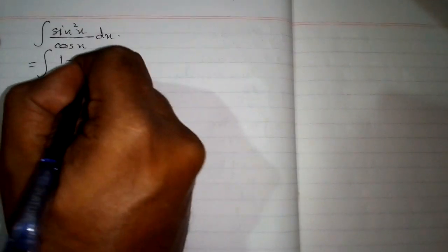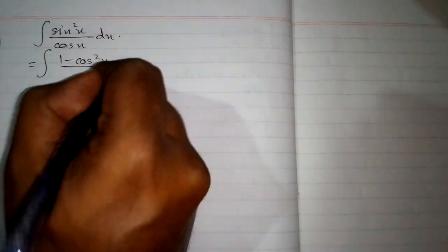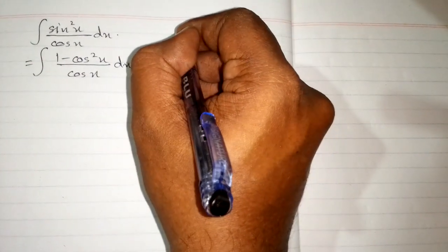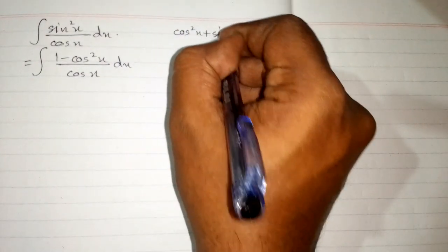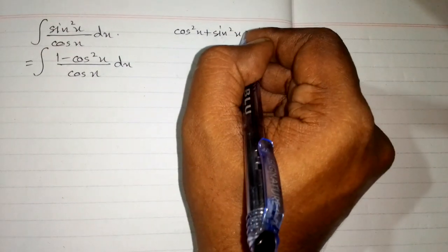In this video we will find the integral of sin²x/cos x. We know that sin²x is 1 - cos²x from the cosine identity: cos²x + sin²x = 1.